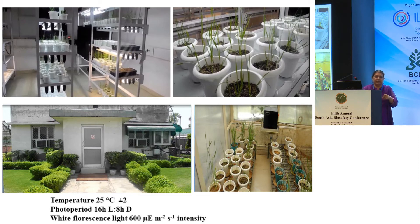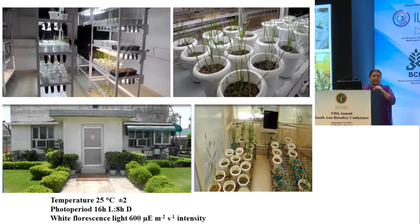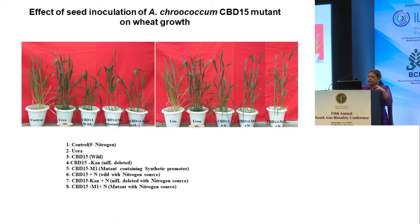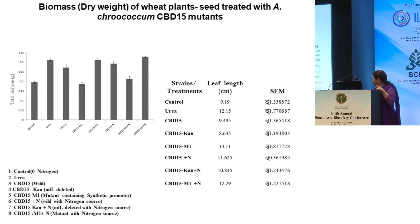Next, we moved on to seed treatment using this mutant microbe, which we call M1. We did seed treatment of wheat seeds. This microbe was originally isolated by the microbiology division at IARI from a cotton field, and they have shown it performs well in a number of crops including wheat, pearl millet, and sorghum. We concentrated on wheat as it is an important crop of India. Using this seed treatment, we studied growth, biomass, and leaf length, and found that in the presence of the CBD-15 mutant M1 with a nitrogen source, growth biomass was good.